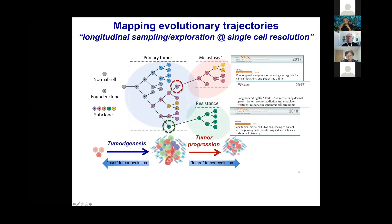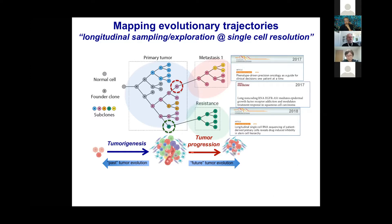The approach we are taking is to map evolutionary trajectories of tumor evolution at the level of single cells, both in the context of tumor progression — how a primary tumor progresses to resistant or metastatic disease — and more recently in tumorigenesis. However, most of the papers we've published in the last two to three years are mostly looking at tumor cell intrinsic mechanisms.